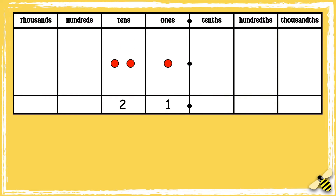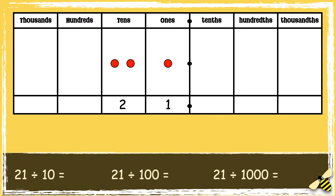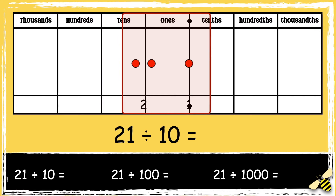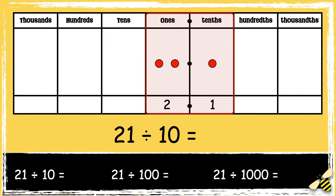Here is the number 21. We're going to divide this number by 10, 100, and 1000. Let's start by dividing it by 10. When we divide a number by 10, the digits move one space to the right. So 21 is now 2.1.